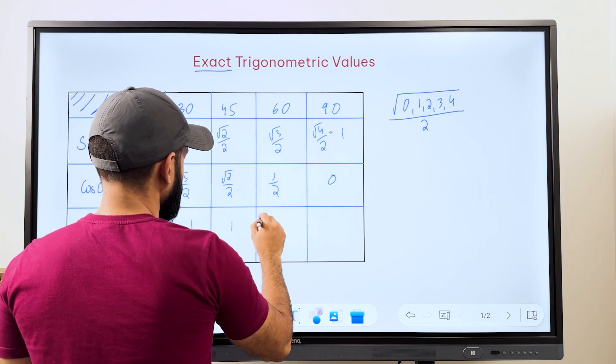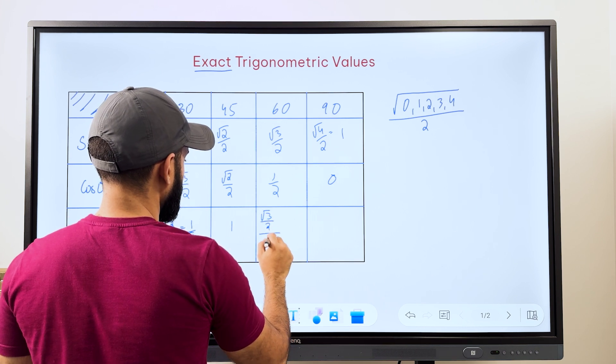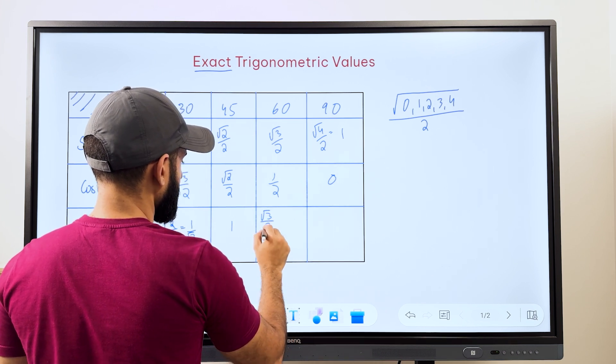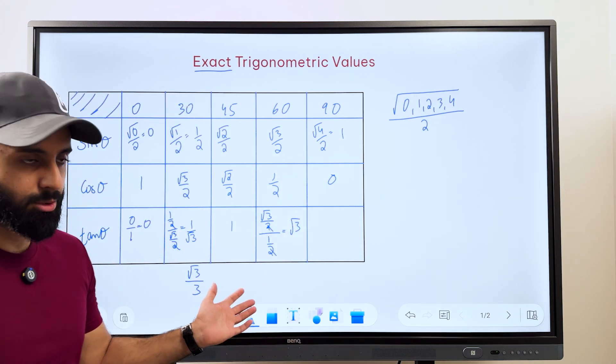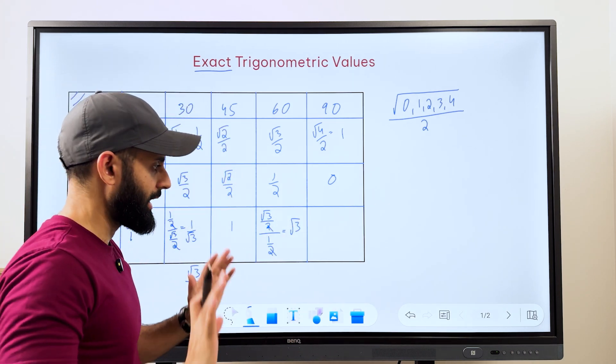For tan 60, we take the value of sin 60. That's root 3 upon 2 divided by the value of cos 60. That's 1 upon 2. 2 and 2 cancel. And the answer is root 3. And there's no need to write this as some other value. This is good enough.